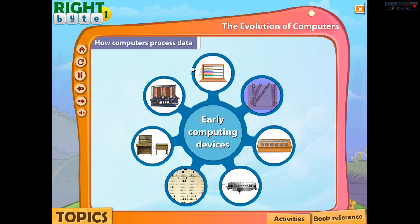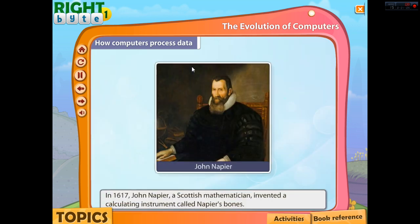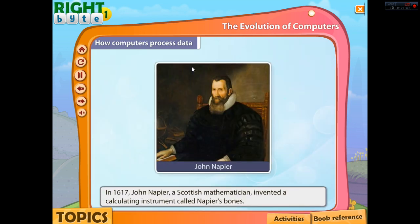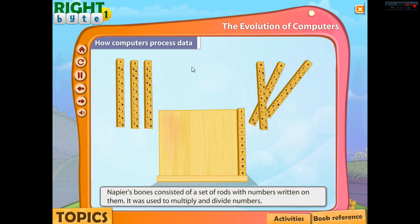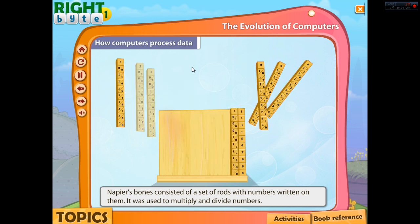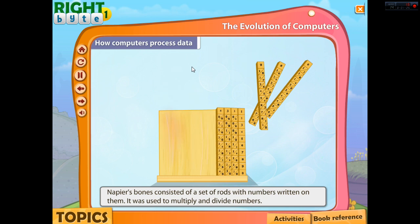The Napier's Bones. Then in 1617, John Napier, a Scottish mathematician, invented a calculating instrument called Napier's Bones. Napier's Bones consisted of a set of rods with numbers written on them. It was used to multiply and divide numbers.